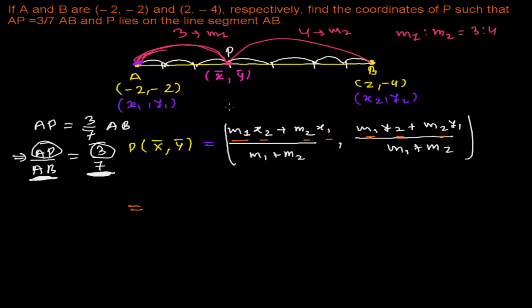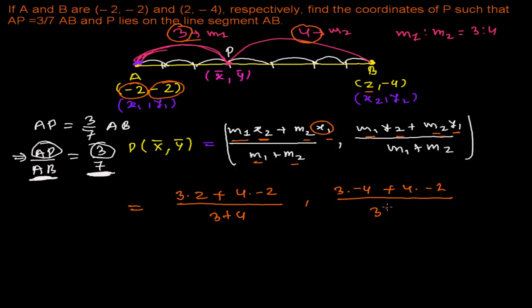So what is my M1? My M1 is here 3. So 3 times now what is my X2? Yes, X2 is my here 2 and then plus M2. What is my M2 here? That's my 4 and what is my X1? My X1 is here -2, -2 whole divided by M1 plus M2. My M1 is 3 and M2 is 4. So it is 3 plus 4. Similarly here M1 is my 3 and what is my Y2? Y2 is my here -4. And then plus M2 that is my 4 times Y1 that is my here -2 and again whole divided by M1 plus M2 that is 3 plus 4.